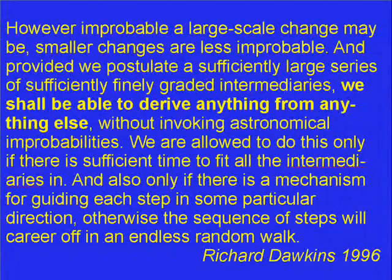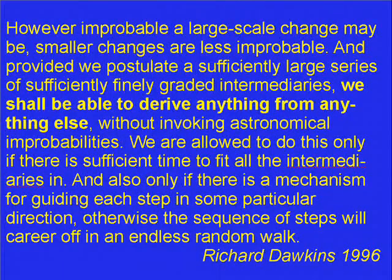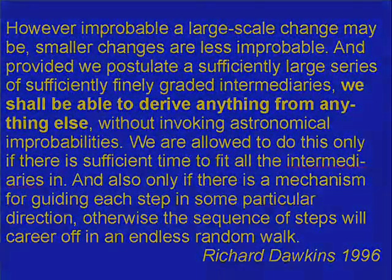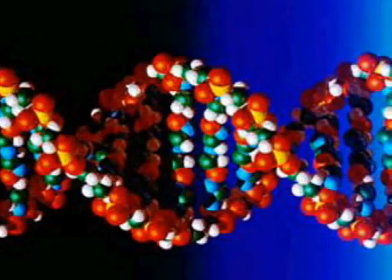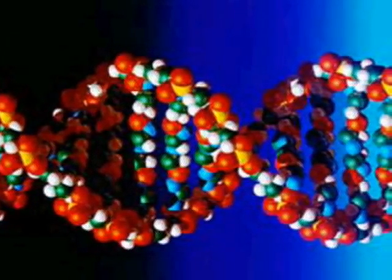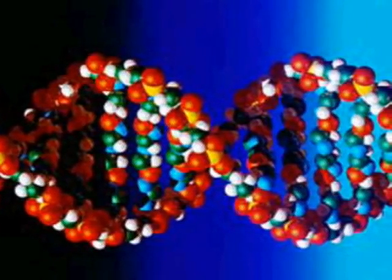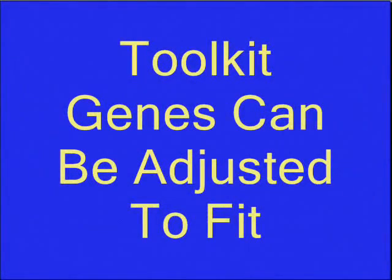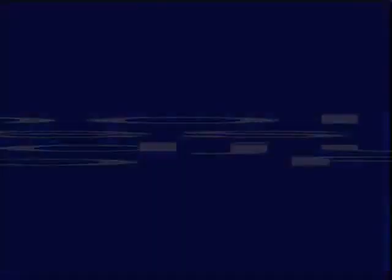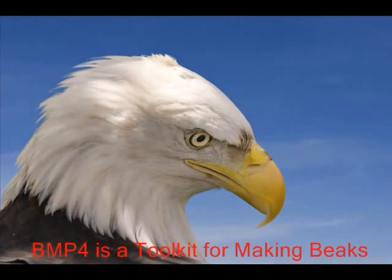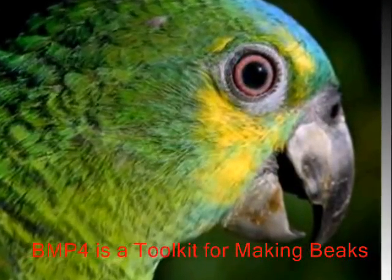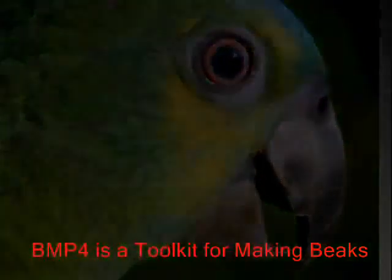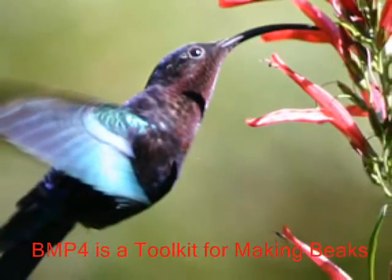Recall that in his effort to get us to believe that evolution could create order out of random chaos, Richard Dawkins claimed that we could derive anything from anything else. The new science of evo-devo shows that this is not the case. Evo-devo studies the evolution of developmental mechanisms and has discovered a series of toolkit genes whose expression can be modulated to vary structural forms. The same toolkit genes can yield different embryonic forms depending on their regulation. Thus, the gene BMP4 controls beak and jaw configurations, and modifying its expression produces parrots' nut-cracking beaks or the long, thin beaks hummingbirds use to extract nectar.